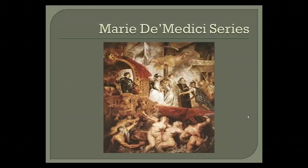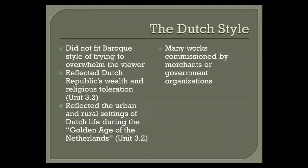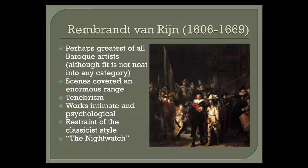The next style of art we're going to look at is the Dutch style. It doesn't quite fit into the Baroque style of trying to overwhelm the viewer, because it reflects the Dutch Republic's wealth and religious toleration of secular subjects, which we'll discuss in Unit 3.2 on the Dutch Republic. It also reflected the urban and rural settings of Dutch life during the Golden Age of the Netherlands, and many of these works were commissioned by merchants and government organizations. The first artist of the Dutch style is Rembrandt, probably the best-known painter in the Western world. During his lifetime, Rembrandt was a wildly successful portrait painter. Today, his reputation rests principally on the probing, introspective paintings of his late years and their subtle shadings implying extraordinary emotional depth.